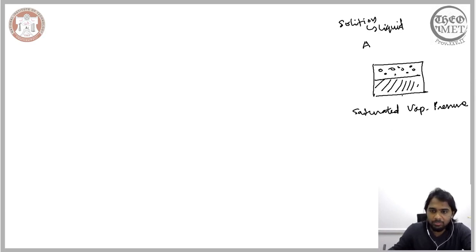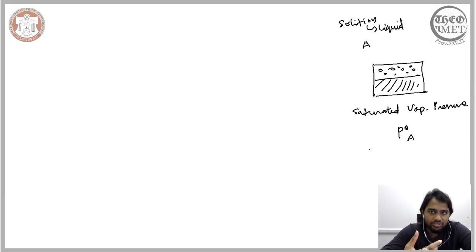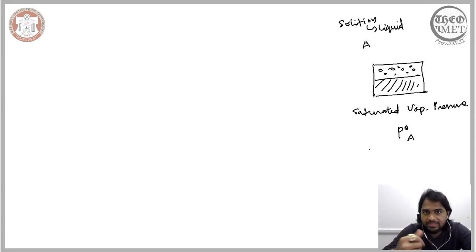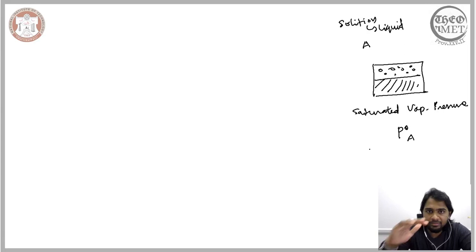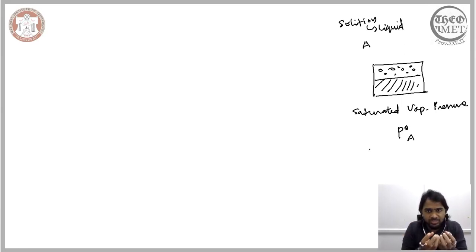This equilibrium is not a static one but a dynamic one, meaning the components in the vapor state are allowed to interact with each other and with the liquid. Some atoms get absorbed by the liquid; to compensate, the liquid releases atoms elsewhere. This balancing action establishes a dynamic equilibrium.